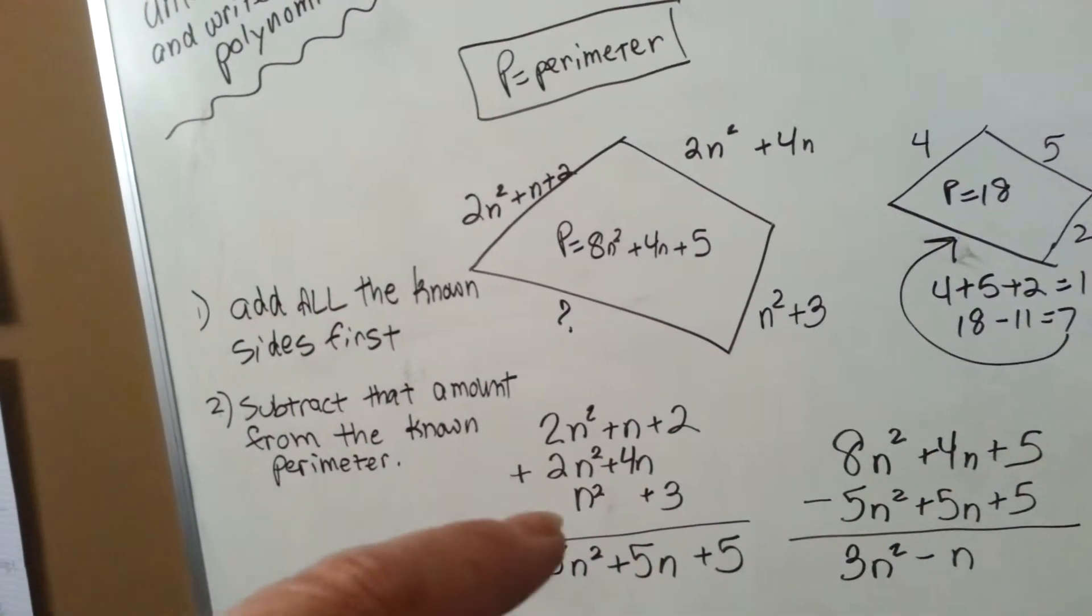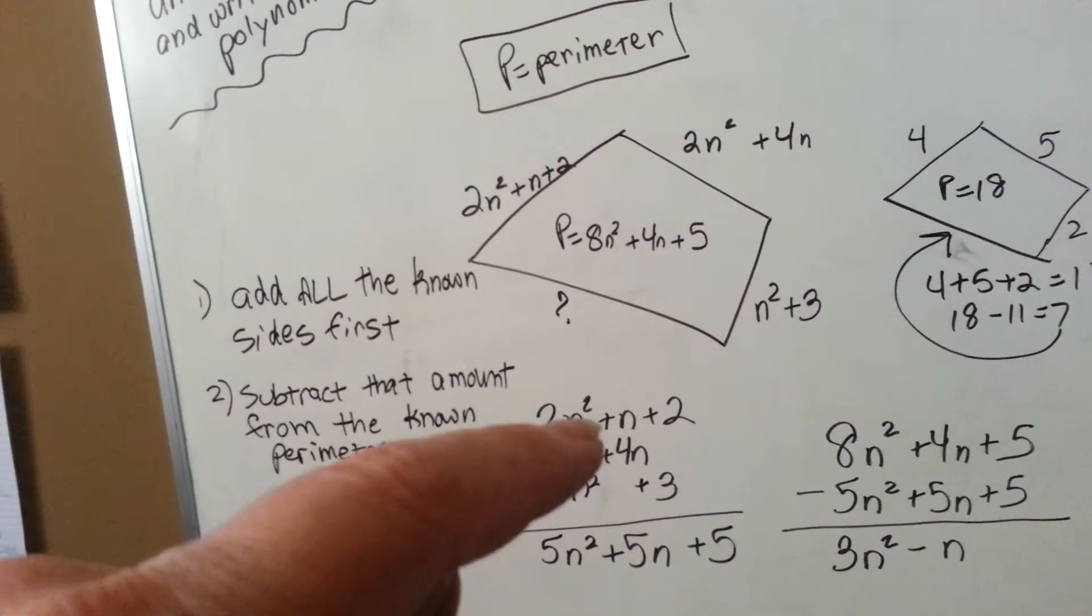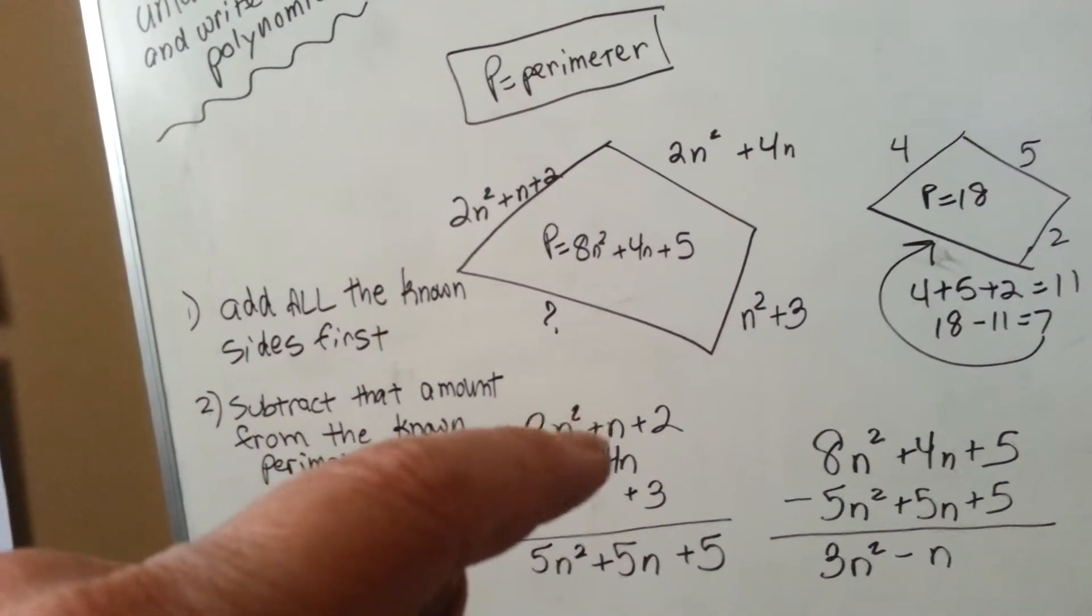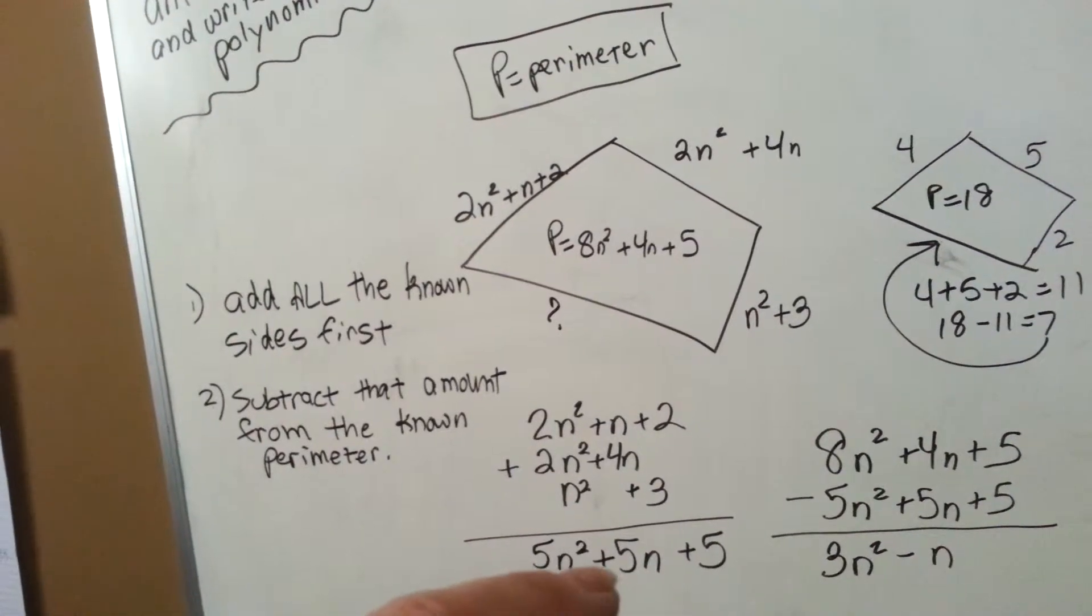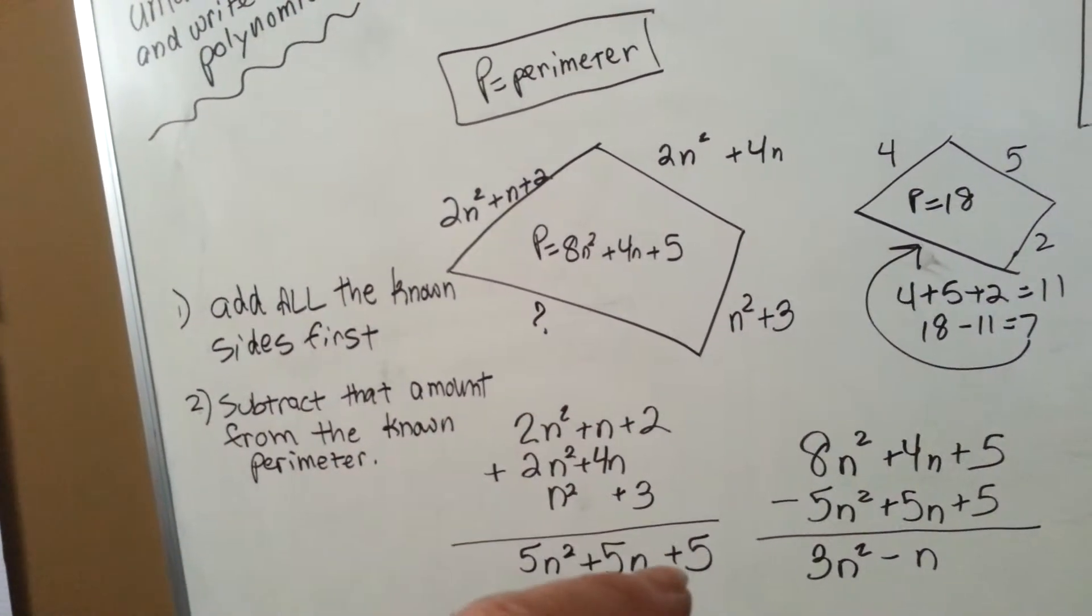2n squared plus 2n squared plus n squared - there's an invisible one there - would be 5n squared. This n has a little one in front of it plus the 4 would give you 5. And then we're just going to add the 2 and the 3 to get this 5.